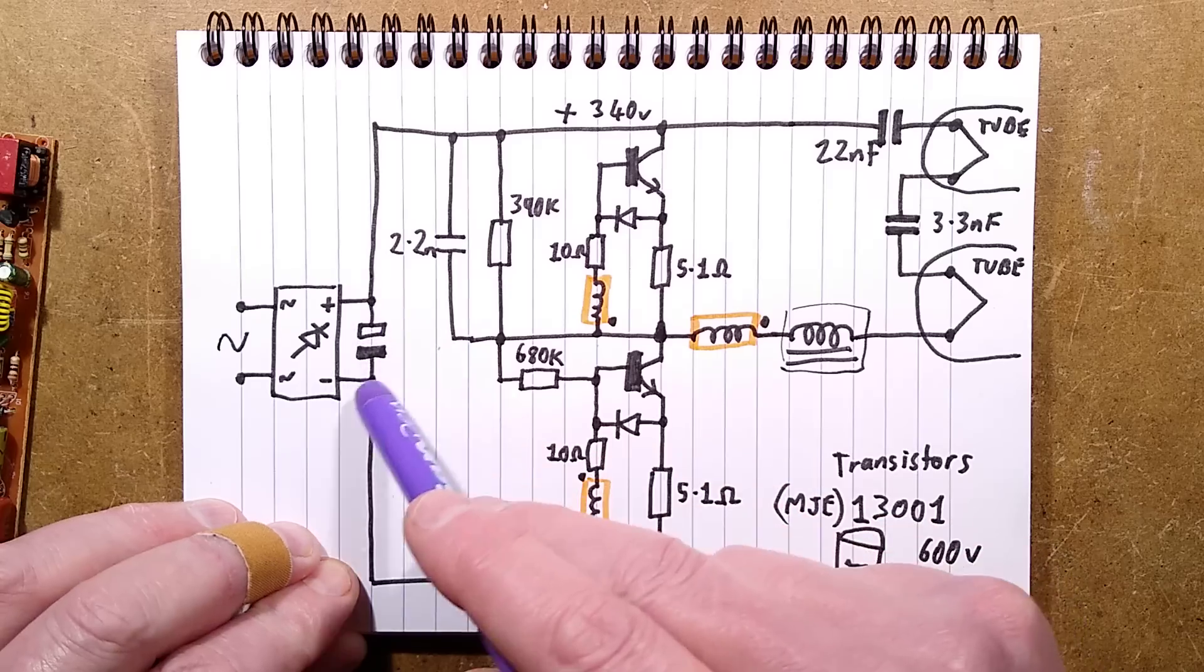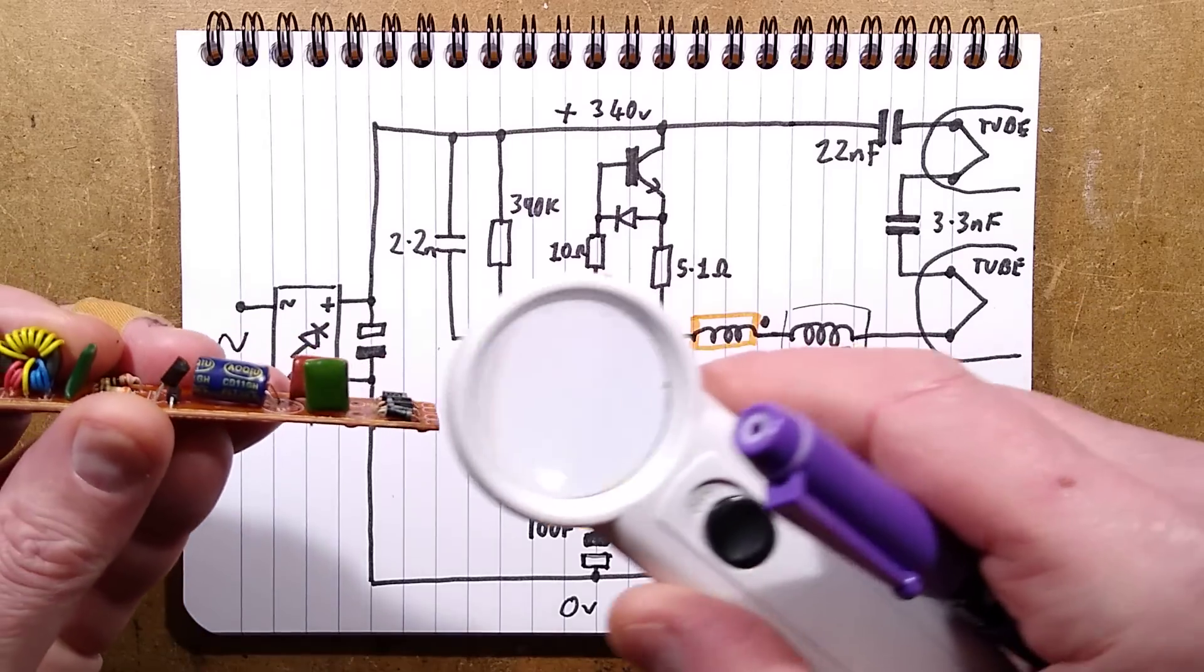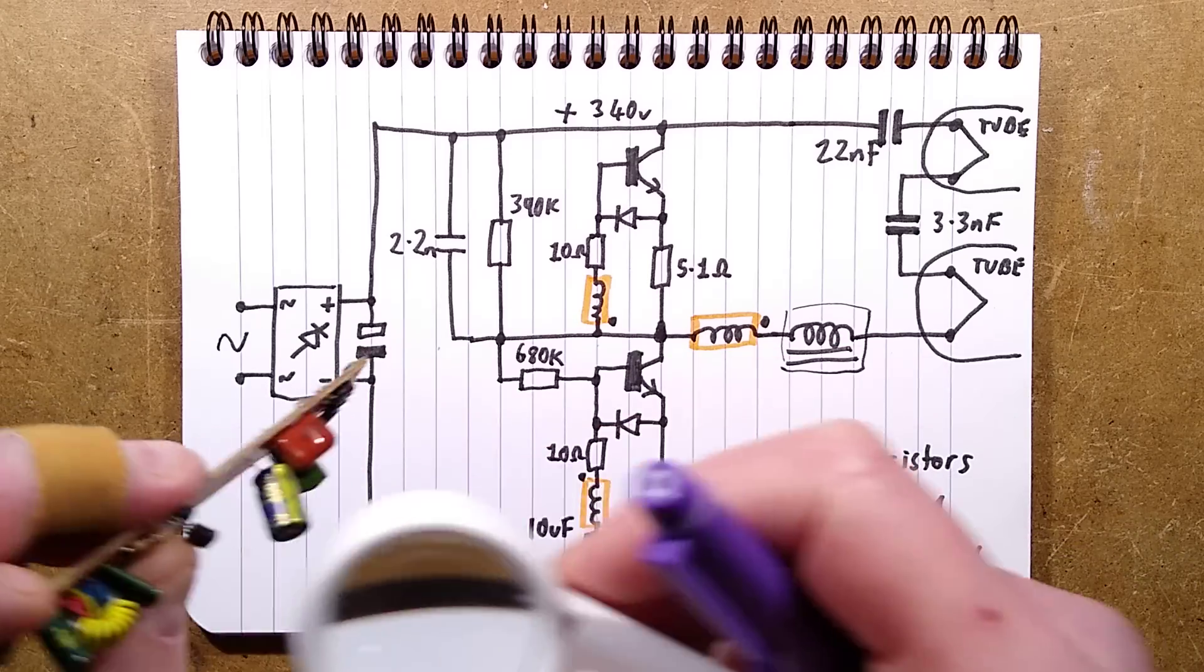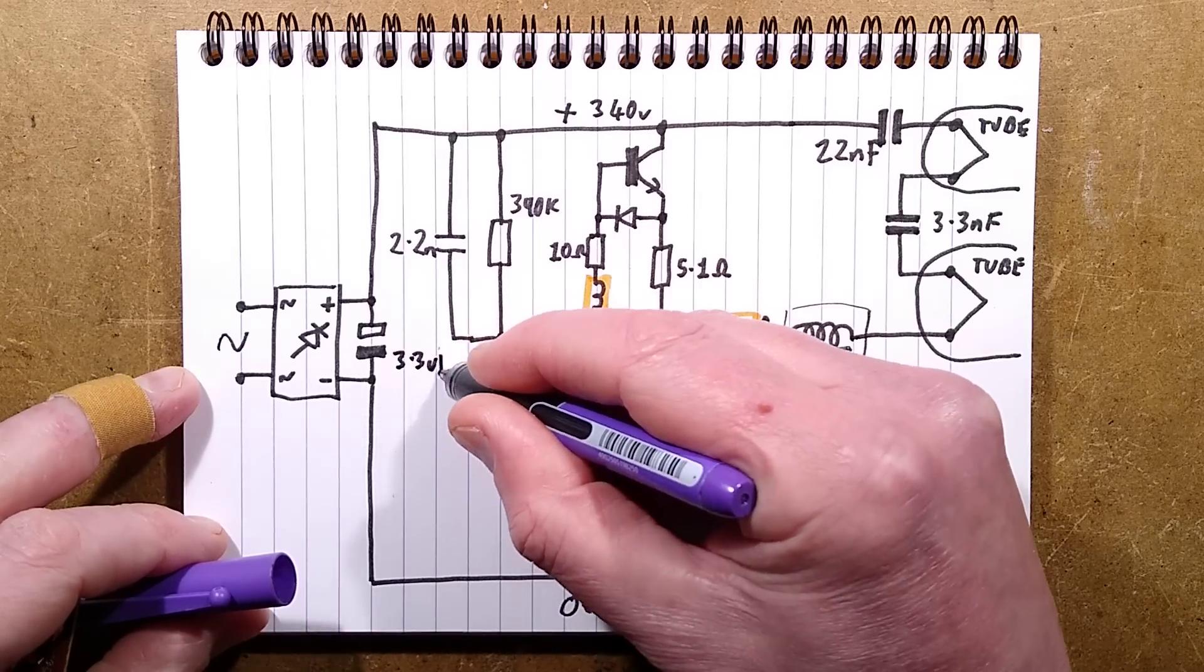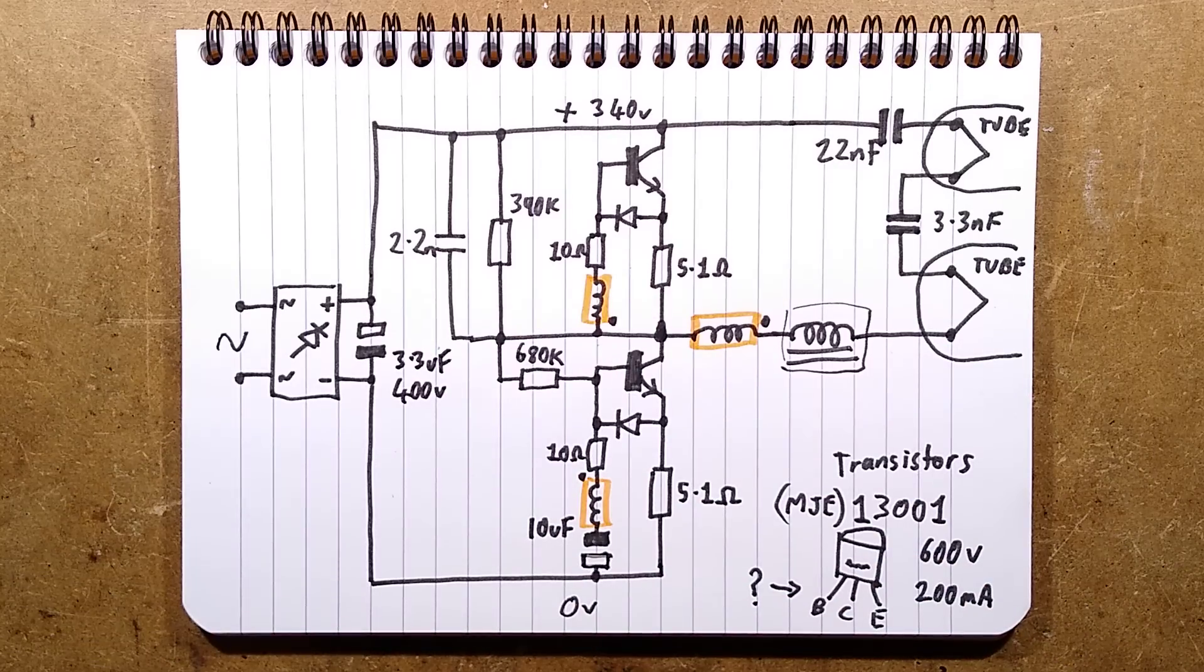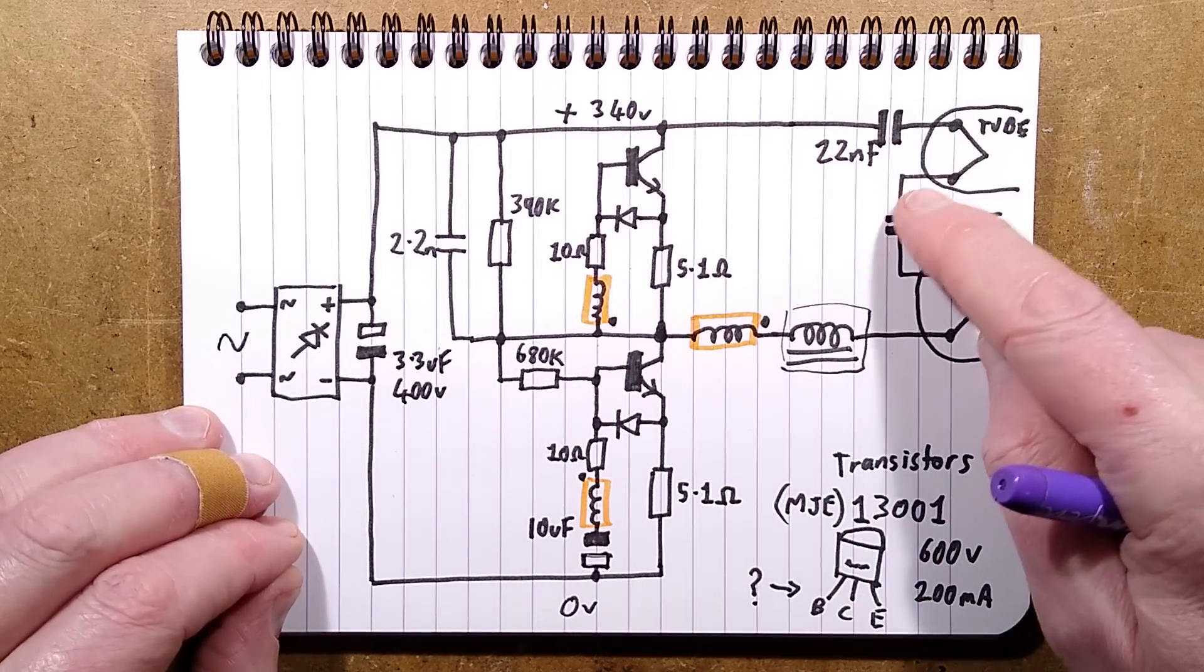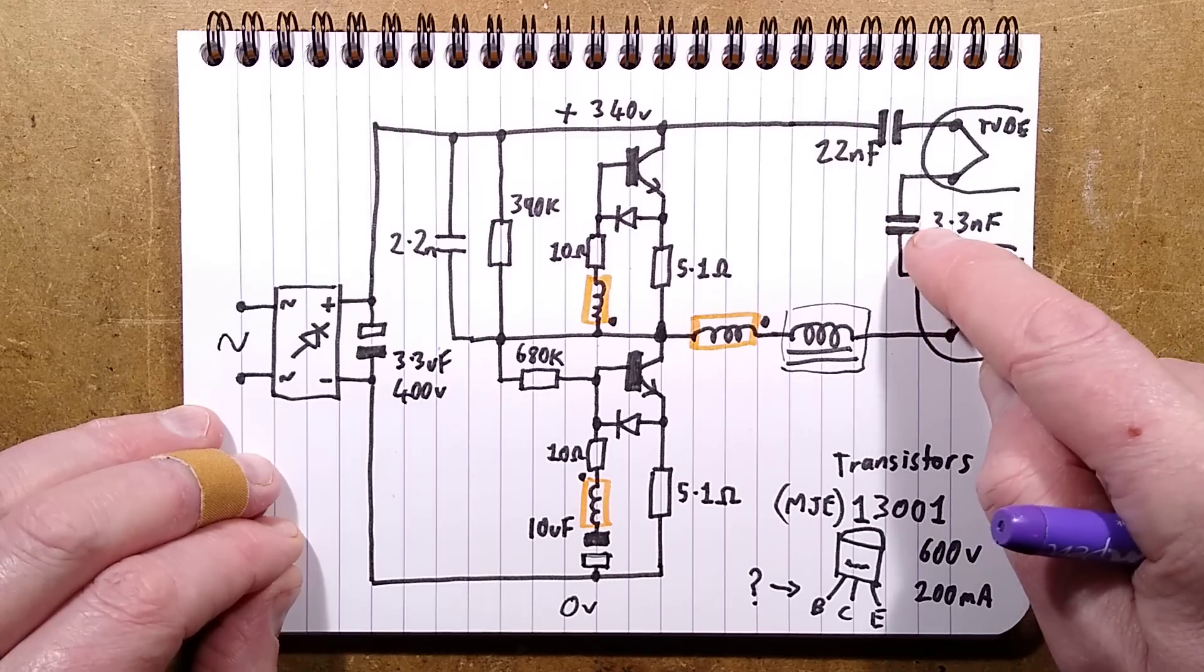The first I looked up to find the pinout of those transistors, rather than just work it out from the circuit. I looked it up and found lots of pictures with a pinout, but that pinout was wrong. It turns out that MGE13001 is available with two pinouts. This one is with the flat facing towards you, base collector emitter. Made much more sense after I'd done that. Okay, so here's the bridge rectifier. There's the capacitor. What's the value of that capacitor? That capacitor is 3.3 microfarad. That was very wrong. 3.3 microfarad, 400 volts.